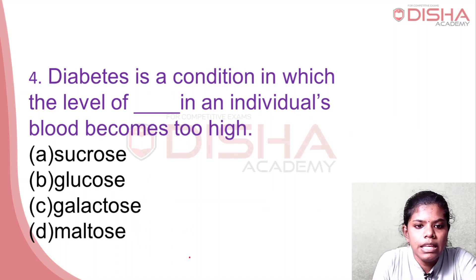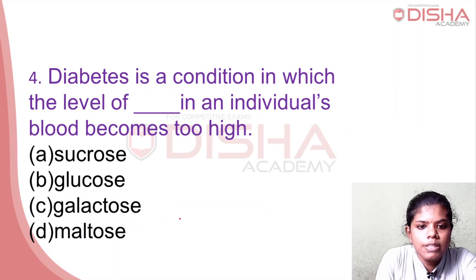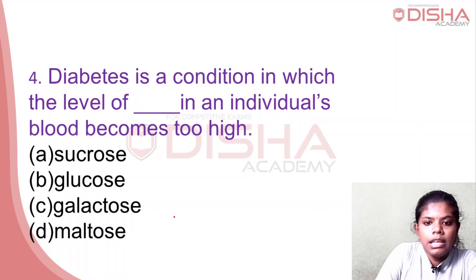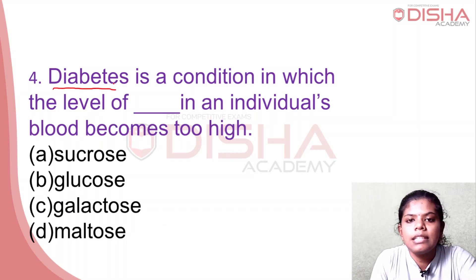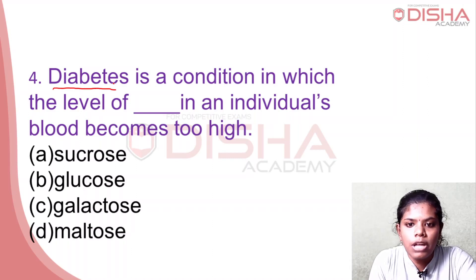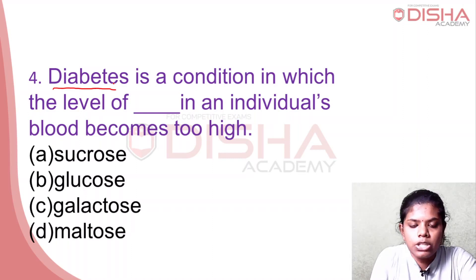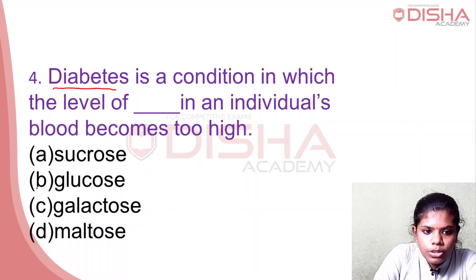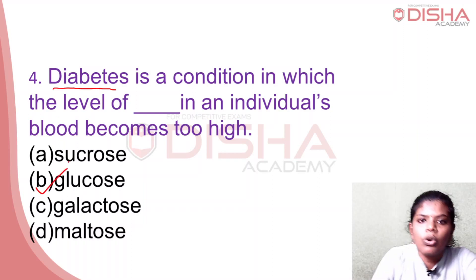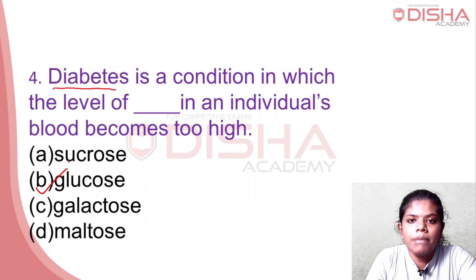Diabetes is a condition in which the level of glucose in an individual's blood becomes too high. Diabetes is a condition in the blood where glucose levels are elevated.